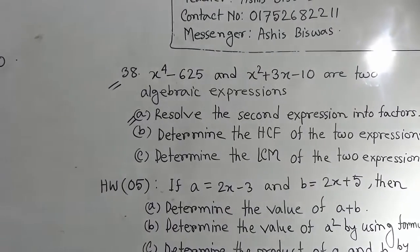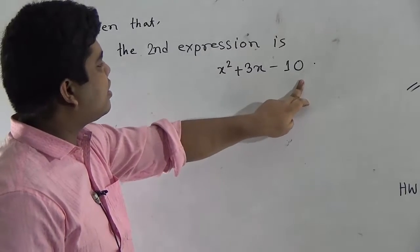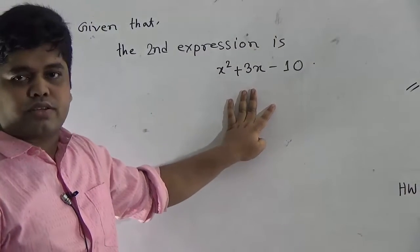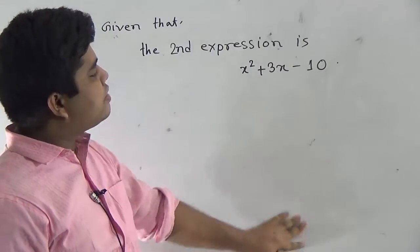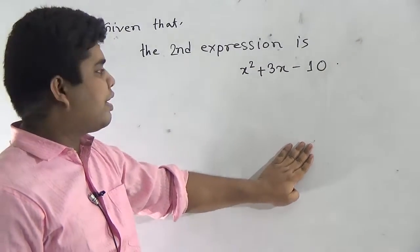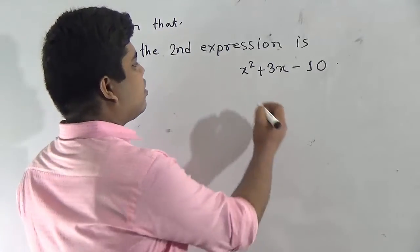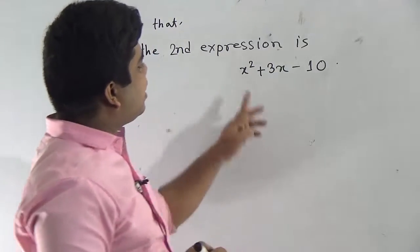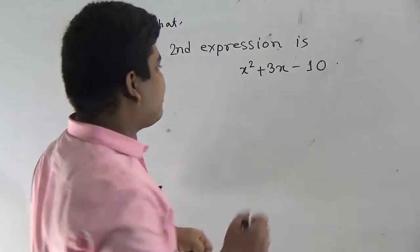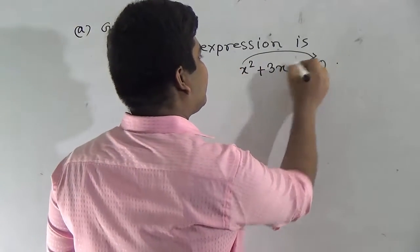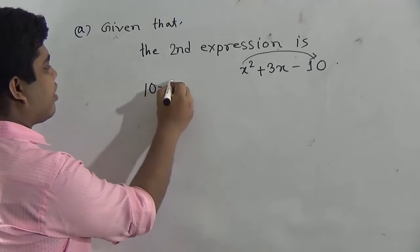Here, x squared plus 3x minus 10. To resolve this into factors, which method is applicable? Yes, the method is middle term break. In order to do the middle term break, what do we do first? We multiply these two numbers — that means the coefficient 10 and x squared — and it will be 10x squared.